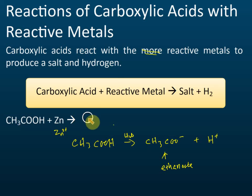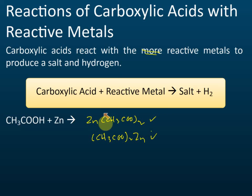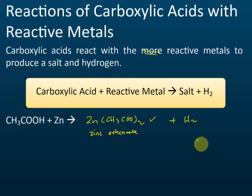So what is the formula of the salt formed? It is Zn(CH₃COO)₂ — zinc ethanoate. Both arrangements are acceptable, but usually we put the positive ion in front when there is a bracket. This is the salt formed, called zinc ethanoate, and hydrogen gas is released at the same time.